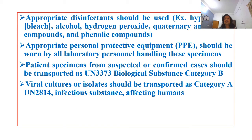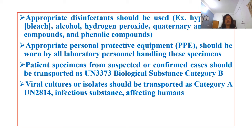Appropriate disinfectants should be used, including hypochlorite, alcohol, hydrogen peroxide, quaternary ammonium compounds, and phenolic compounds. Appropriate personal protective equipment (PPE) should be worn by all laboratory personnel handling these specimens. Patient specimens from suspected or confirmed cases should be transported as UN 3373, Biological Substance Category B. Viral cultures or isolates should be transported as Category A, UN 2814, coded as infectious substance affecting humans.